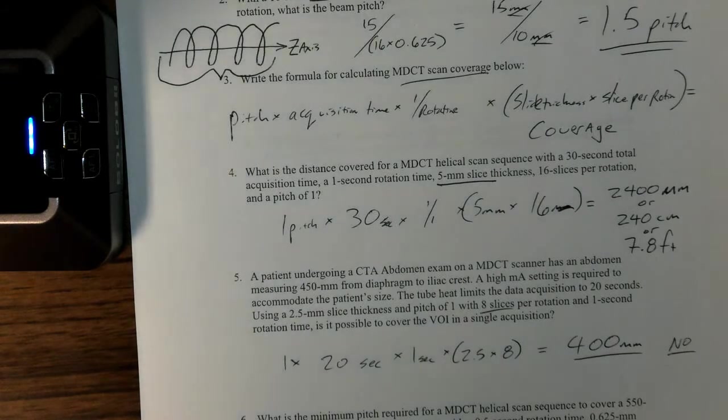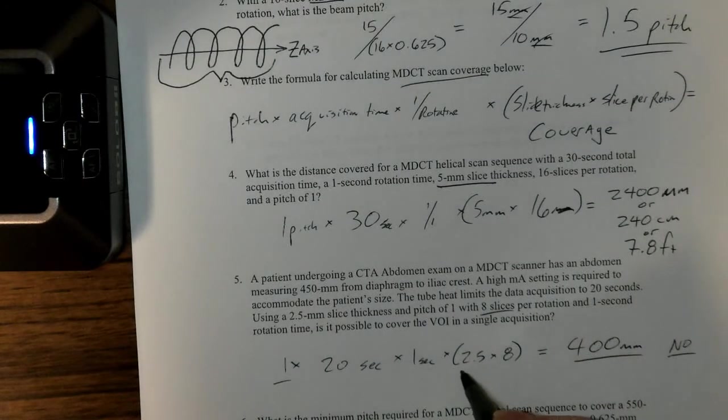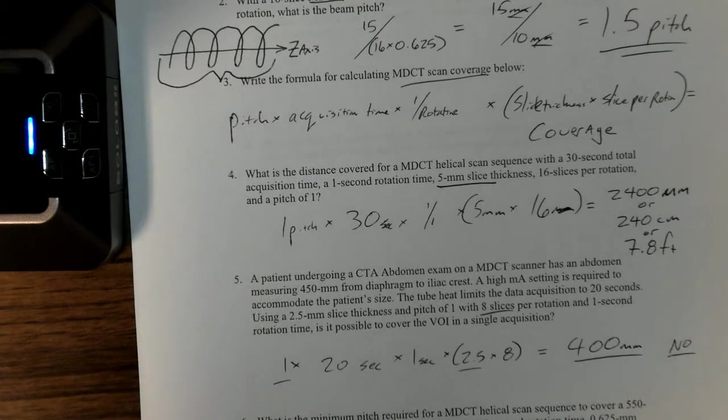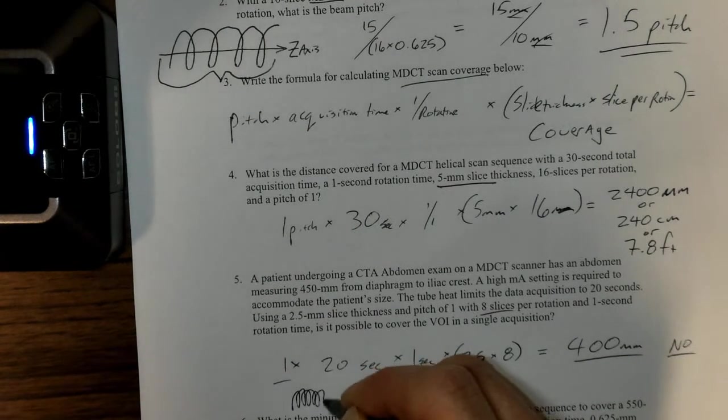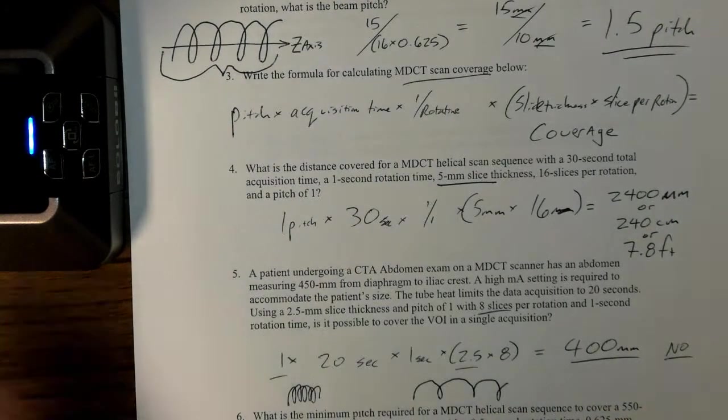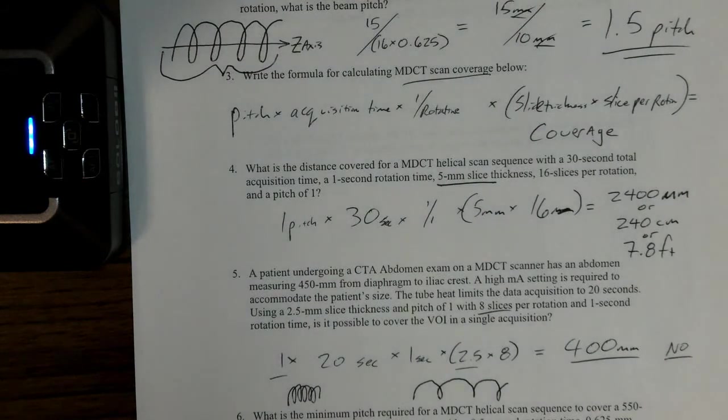The answer is no, I cannot with this patient's size and with these scanning constraints. Either I'm going to have to change the pitch here or I'm going to need to change the slice thickness, probably preferably the pitch. Turn the pitch up a little bit in order to cover the area. That would move it from a pitch that's pretty close to a pitch that's more spread out in terms of the area that's covered for each rotation.